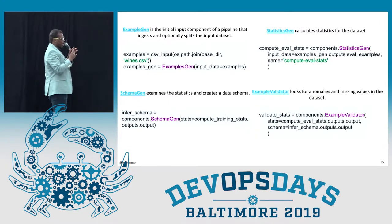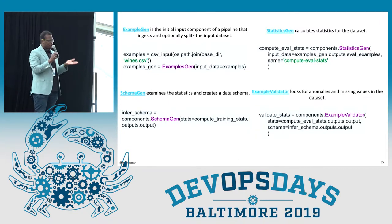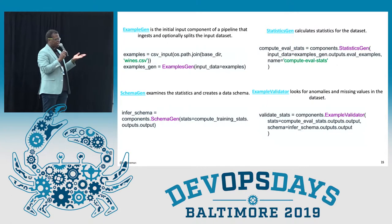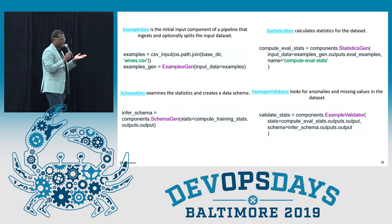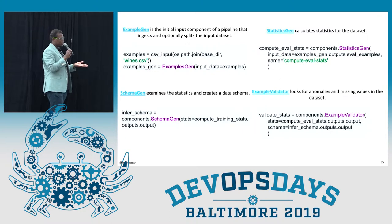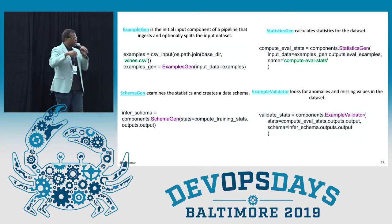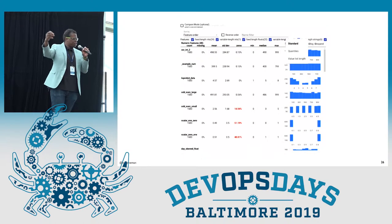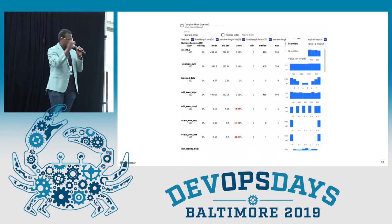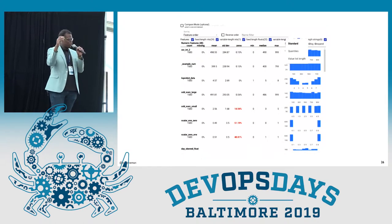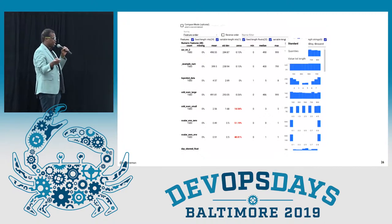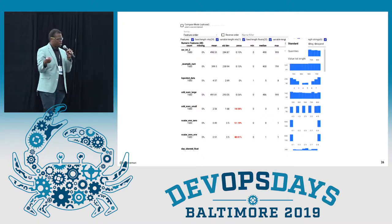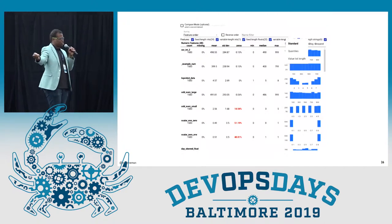The next components handle schema generation — so you know how your data is structured, the schema of the actual data. From there, it gives you a UI basically. Once you have your data and a schema for that data, you can see a user interface of how your data is laid out, so you can make better models and track what your data is doing.